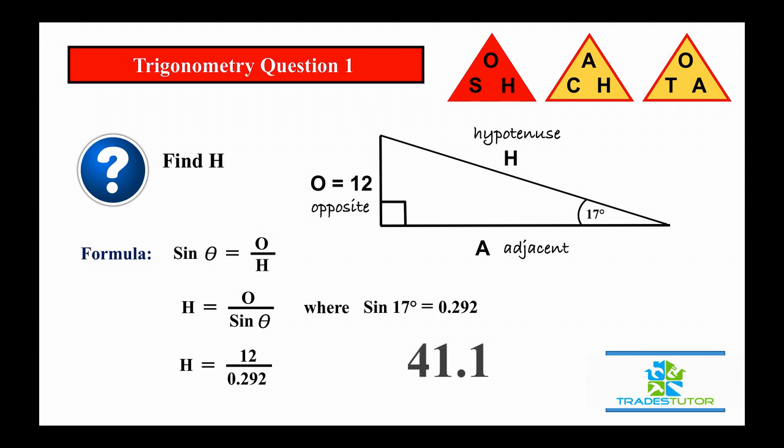So if we were to plug the numbers in, what we get is the hypotenuse is 41.1, which makes sense. It's going to be a lot larger, a lot longer. All right, we'll throw that one up there.